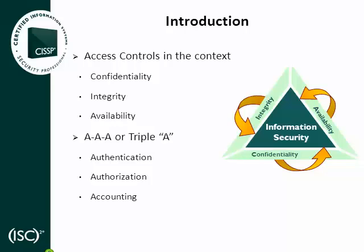From the availability perspective, system resources must remain ready for use by those who are authorized. The role Access Control plays in availability is to limit access to those who have a verified need, to minimize the potential for accidental damage, and to minimize opportunity for denial of service. Access Controls can be summarized by the acronym AAA, which stands for Authentication, Authorization, and Accounting. AAA will be the outline for this preview: first, techniques for authentication; second, means of authorization; and lastly, approaches to accountability.